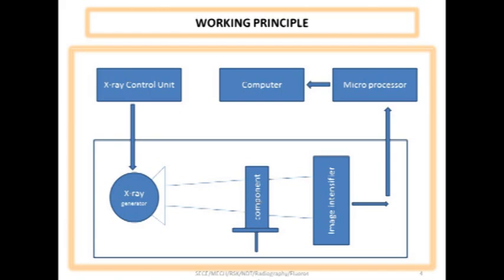Once the x-ray passes through the component, it is made to fall on image intensifier. This image intensifier is nothing but a fluorescent material which gets activated by the strength of x-rays passing through the component. Finally, from the image intensifier, the signals are processed to the microprocessor.